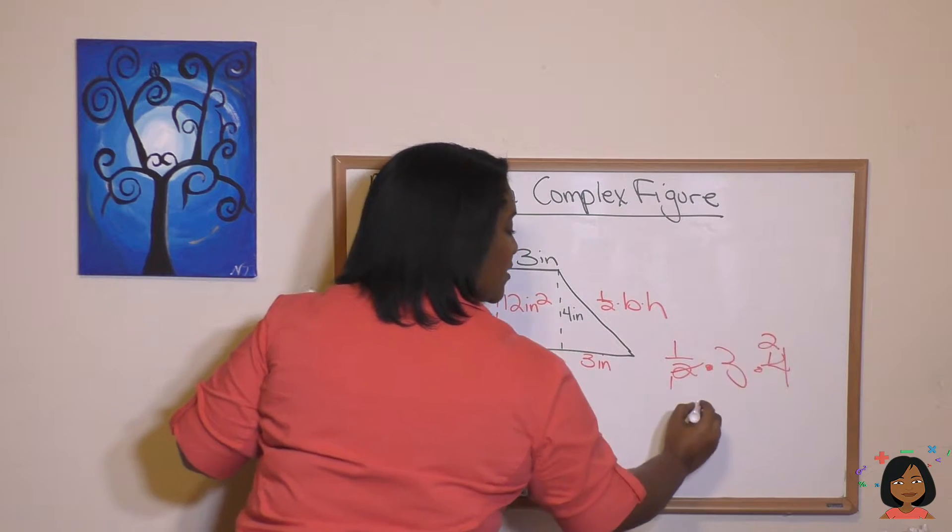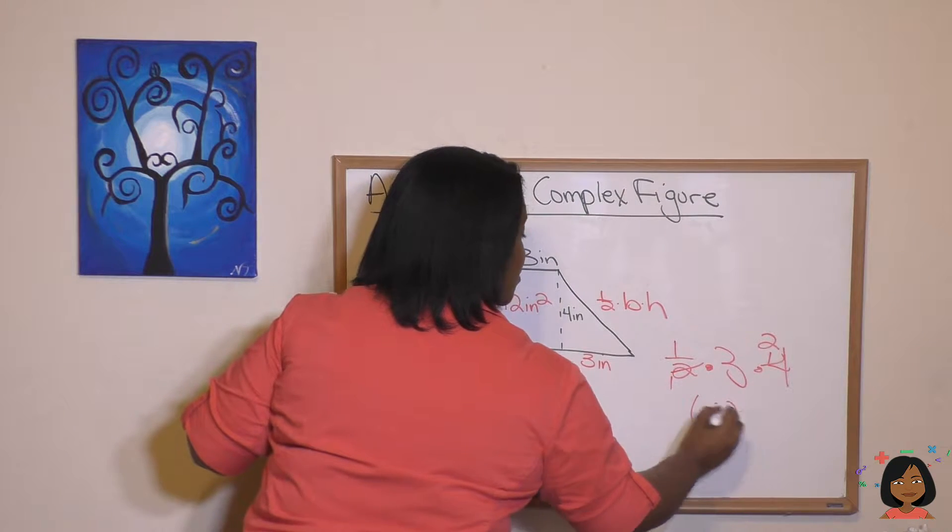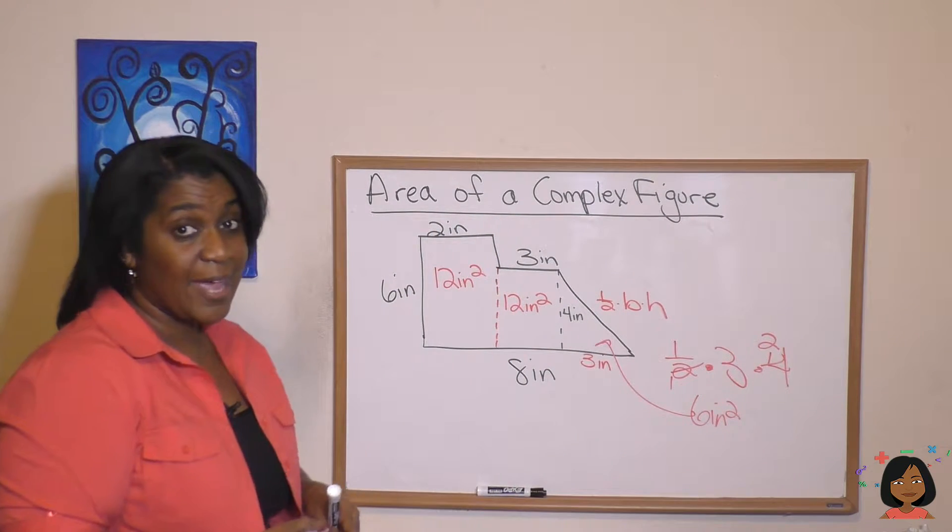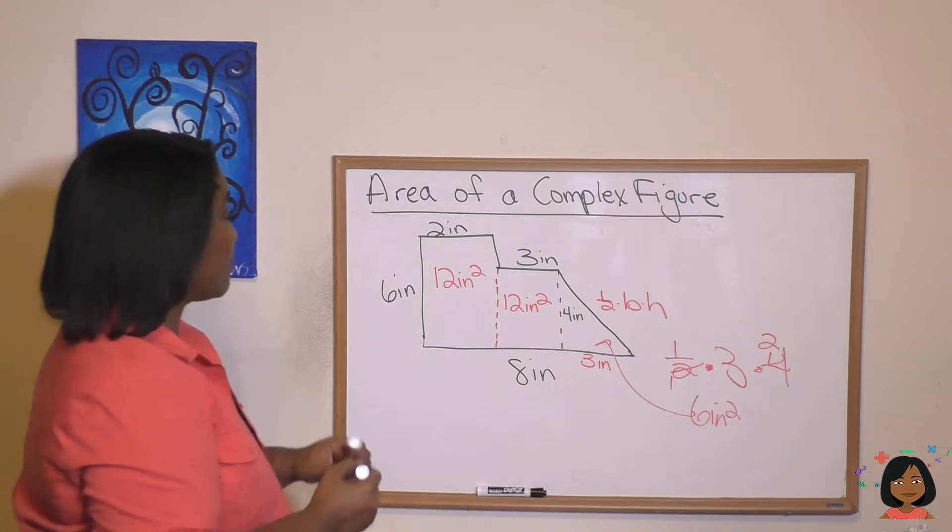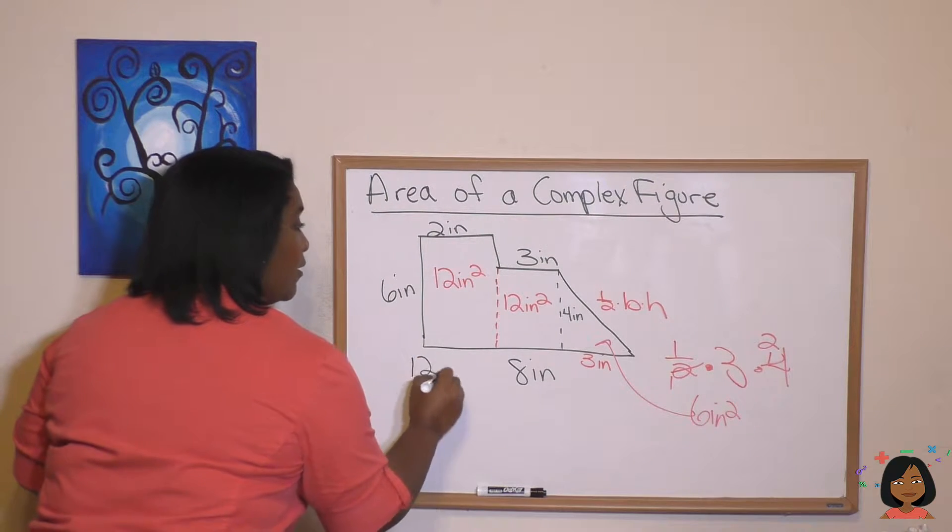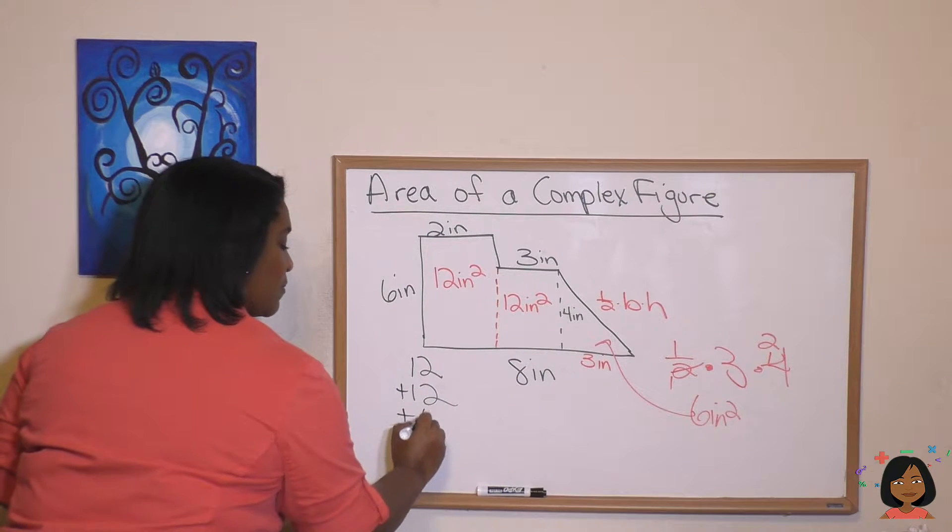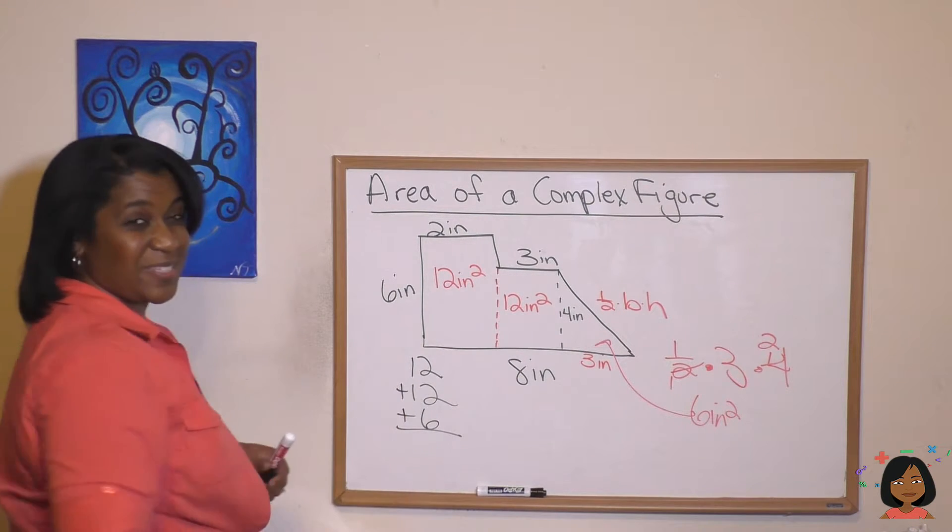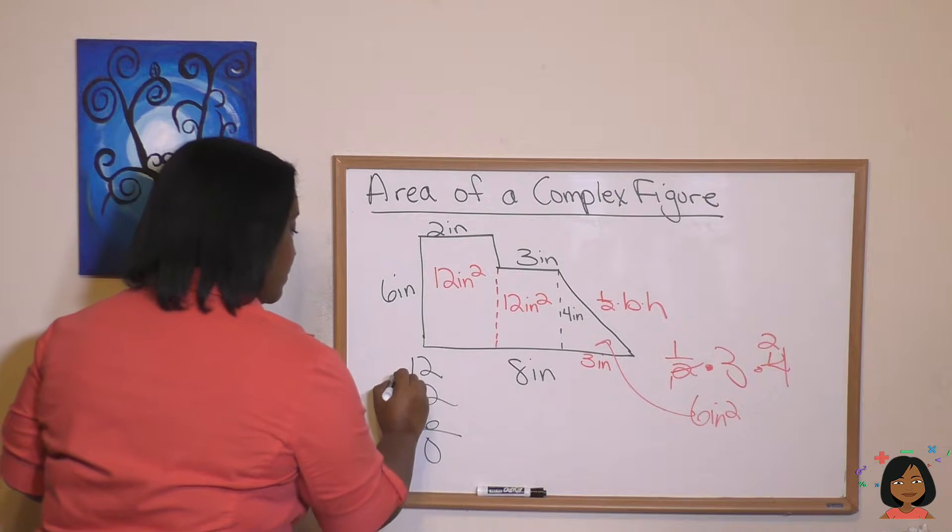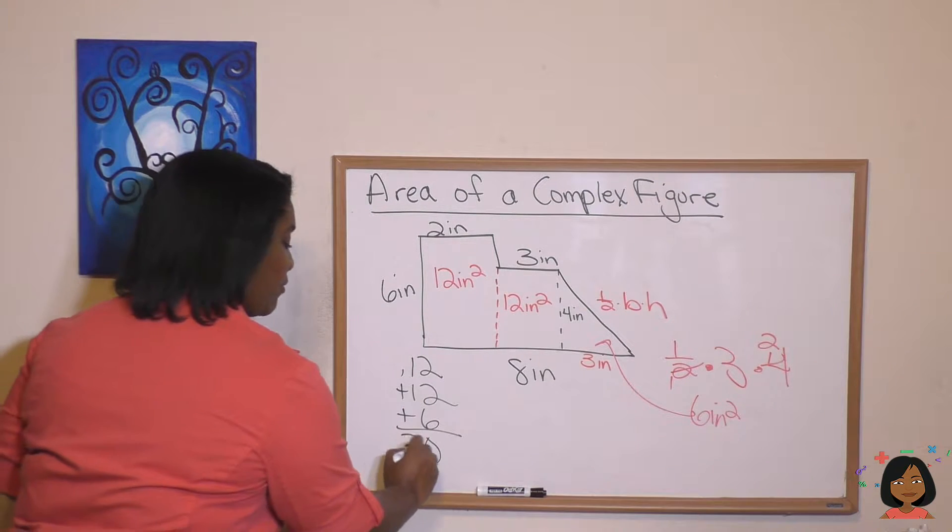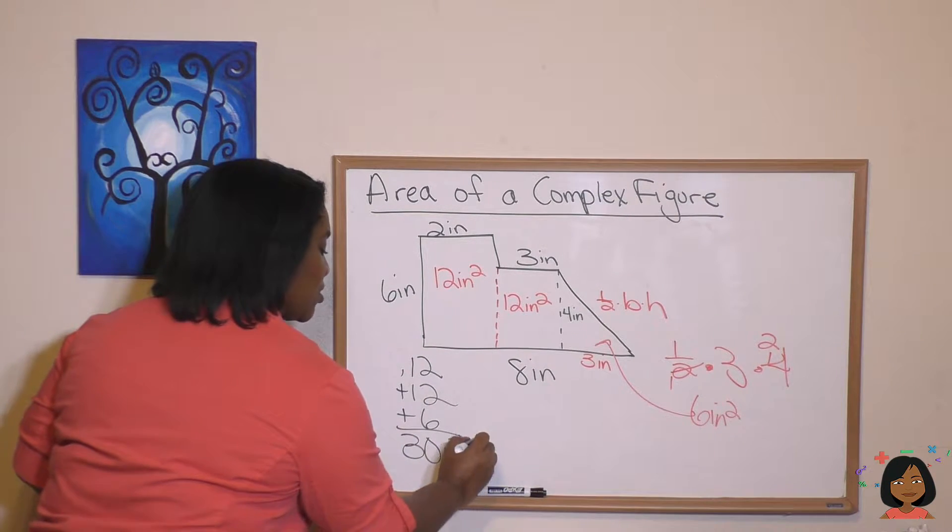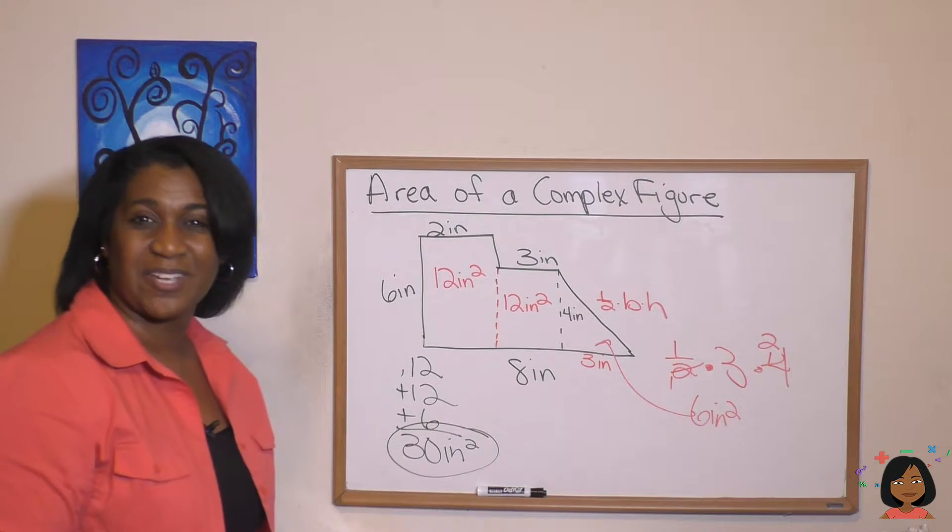And I'm left with six inches squared for this piece. All I have to do now is add them together. 12 plus 12 plus six. Six and two is eight. Eight and two is 10. One, two, and three. So 30 inches squared is the area of this complex figure.